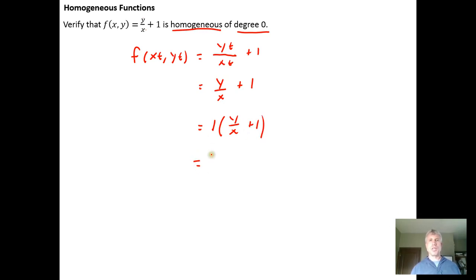And so we'll notice two things. We know that t to the zero equals one as long as t isn't zero, and y over x plus one is the original function f of xy. So we have a function that's homogeneous of degree zero.